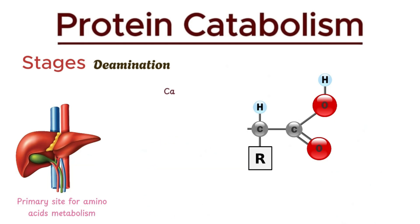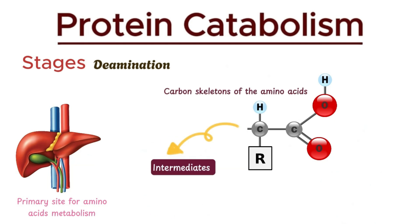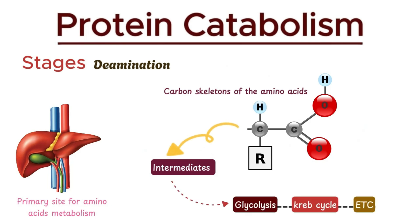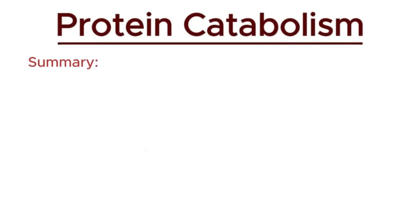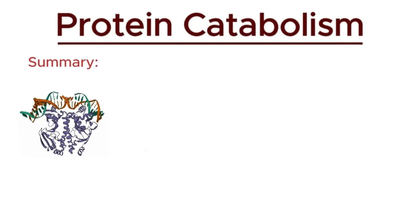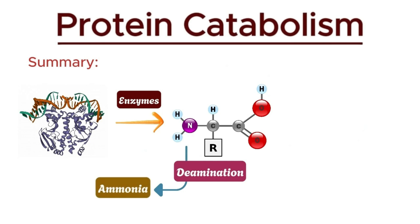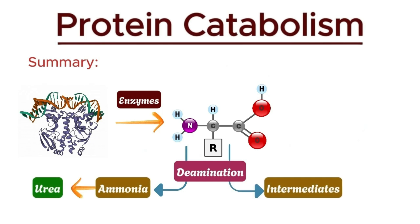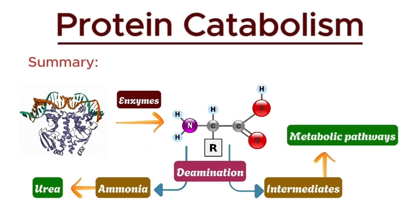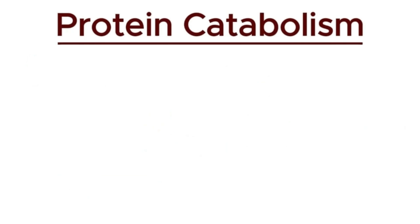The urea is then transported to the kidneys for excretion. Meanwhile, the remaining carbon skeletons of the amino acids are converted into various intermediates that enter different metabolic pathways, ultimately contributing to energy production. To recap: complex proteins are broken down into amino acids through enzymatic action. These amino acids undergo deamination, producing ammonia and various intermediates. The ammonia is safely converted to urea and excreted, while the carbon skeletons enter metabolic pathways to produce energy.